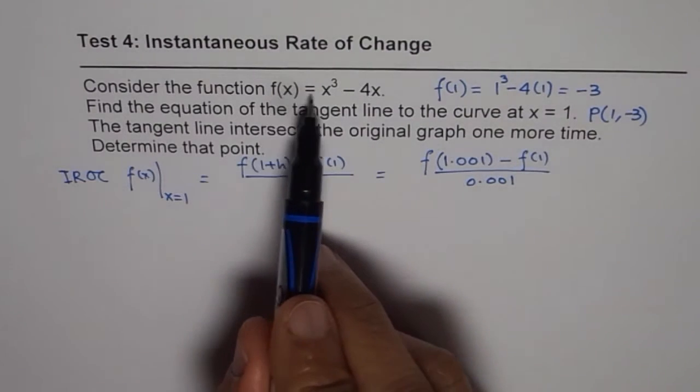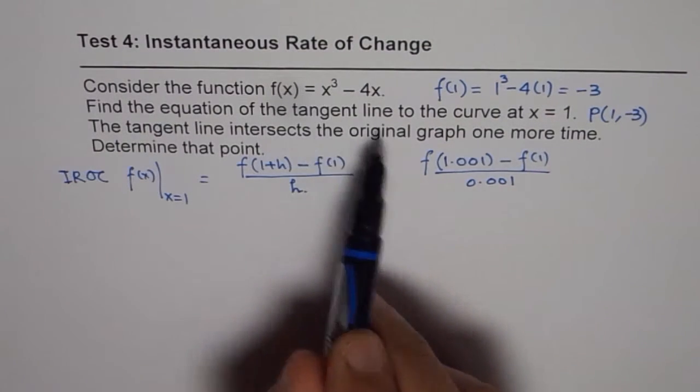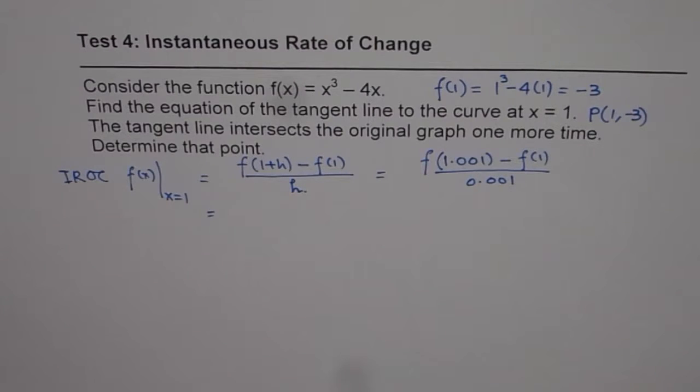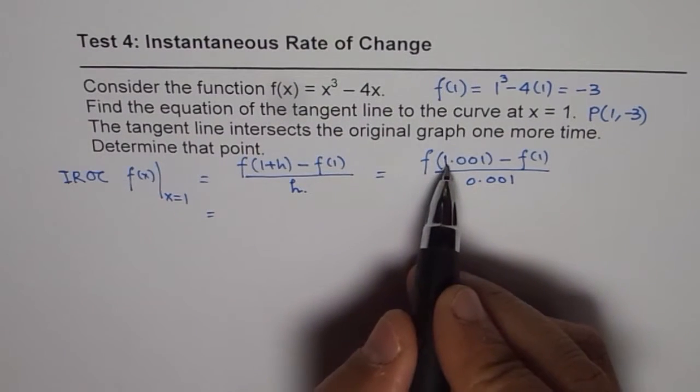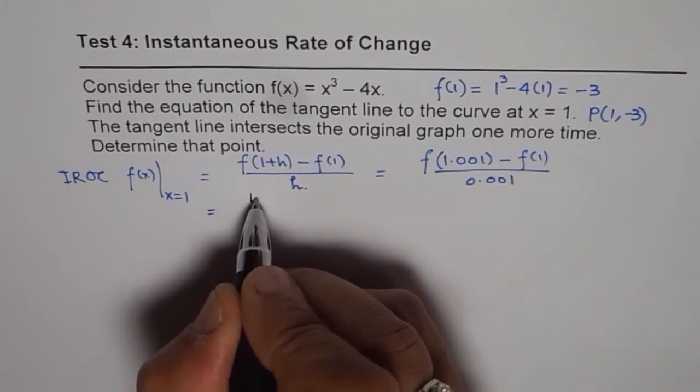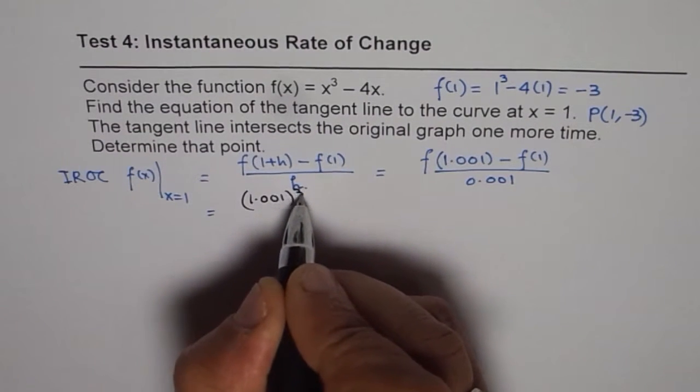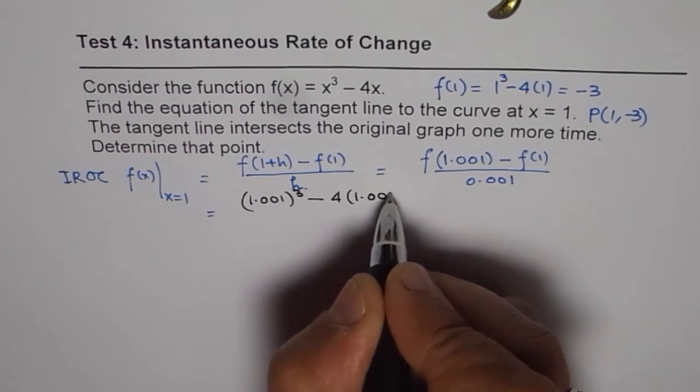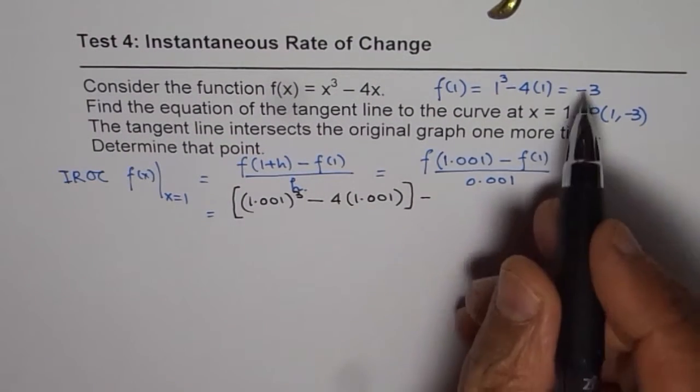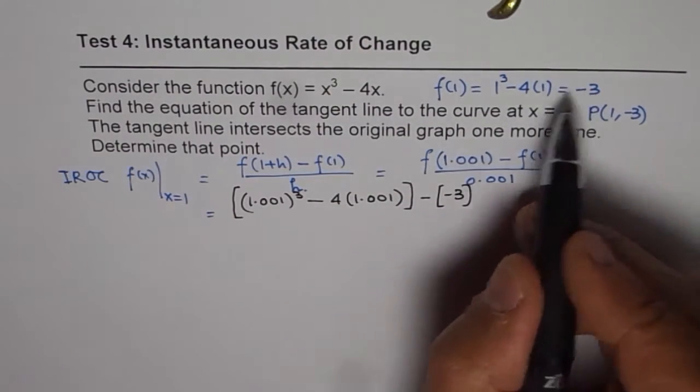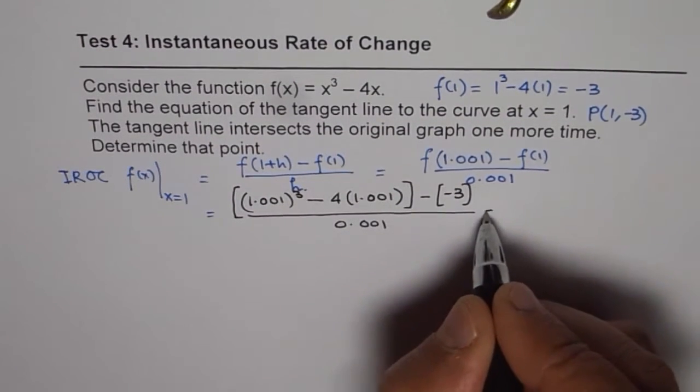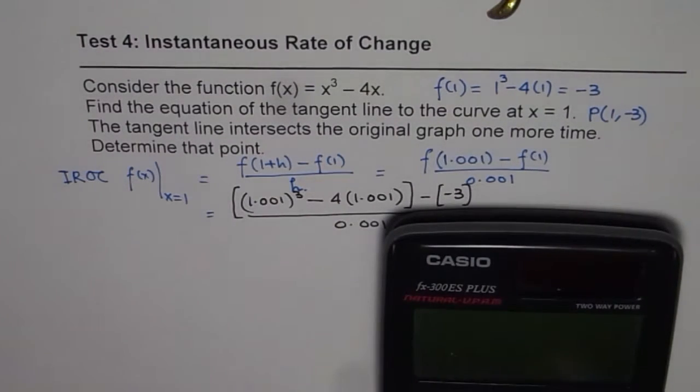So, what you can do is, you can use calculator, plug in the value, and find the answer. So, basically, f of 1.001 is that you have to substitute 1.001 for x. So, you get 1.001 whole cubed minus 4 times 1.001. So, that is f(1.001) minus f(1), which is minus 3 for you. The value which you just found, f(1.001) divided by 0.001. So, you can use the calculator and find the answer.